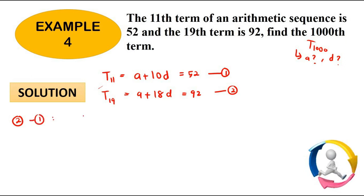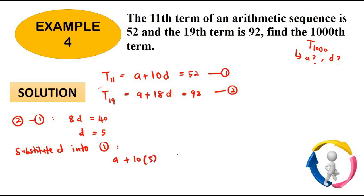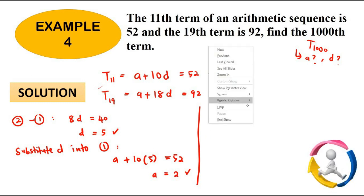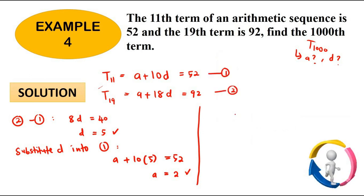So equation 2 minus equation 1 would be 8d equals to 40, so our d is 5 eventually. So substitute d into equation 1, so we have a plus with 10 times 5 equals to 52, so eventually we would have our a to be 2. So when we have our a is 2 and our d is 5, don't forget we need to find T1000. So T1000 should be a plus 999d. So taking up your values for a and d will be 2 plus 999 times 5, so the final answer is 4997.